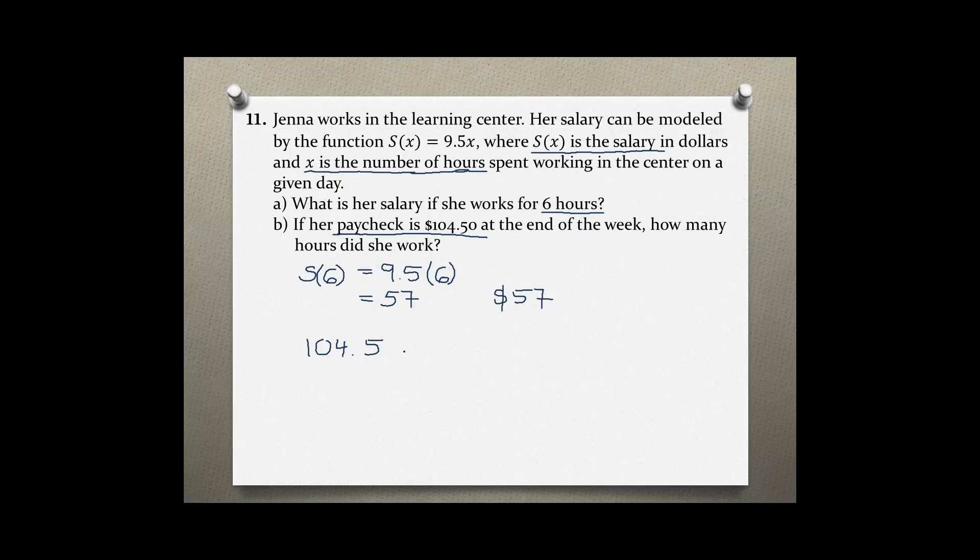$104.50 equals 9.5x. Solving for x we divide both sides by 9.5. So x equals, if you punch this into the calculator, that should equal 11. So pertaining to the problem, that means in this particular week she was working 11 hours.